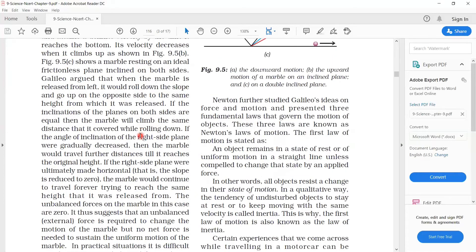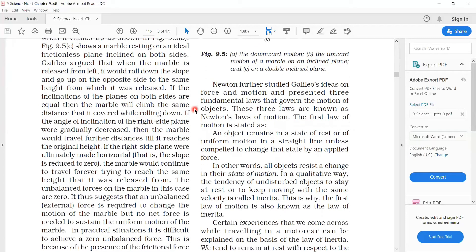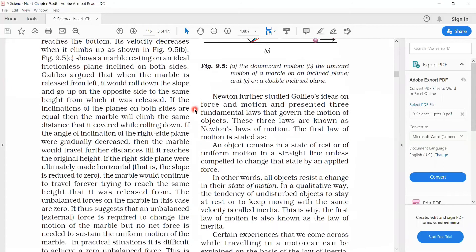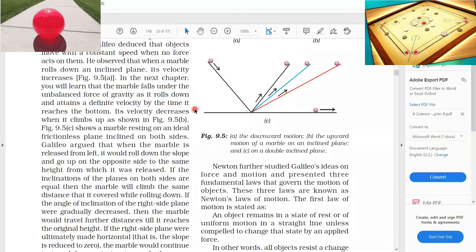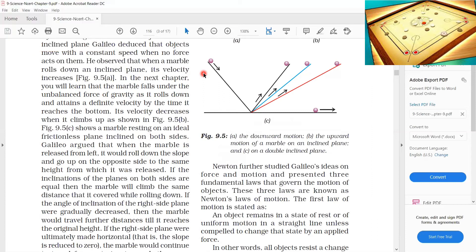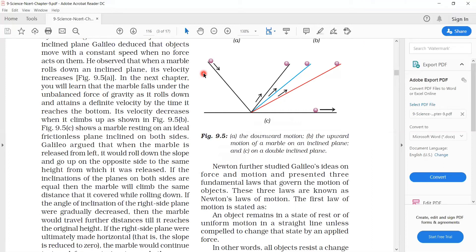So we will see what the first law states. The first law states that if an object is already at rest or uniformly moving in a straight line, unless and until we don't disturb that object, it will remain in the same position or continue uniformly moving in a straight line. This is Newton's first law.